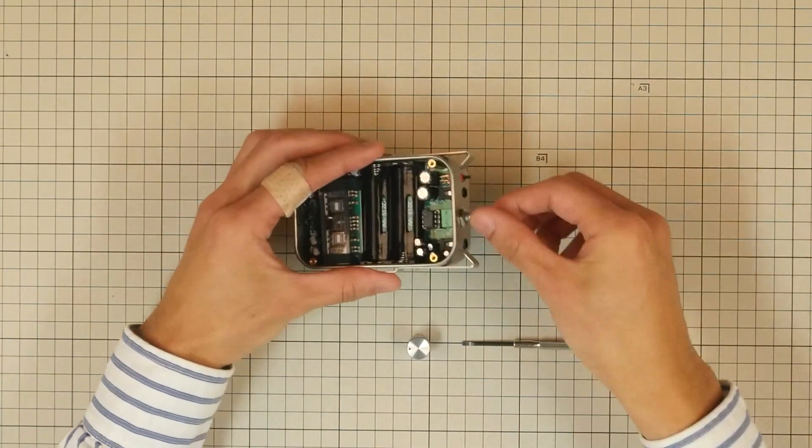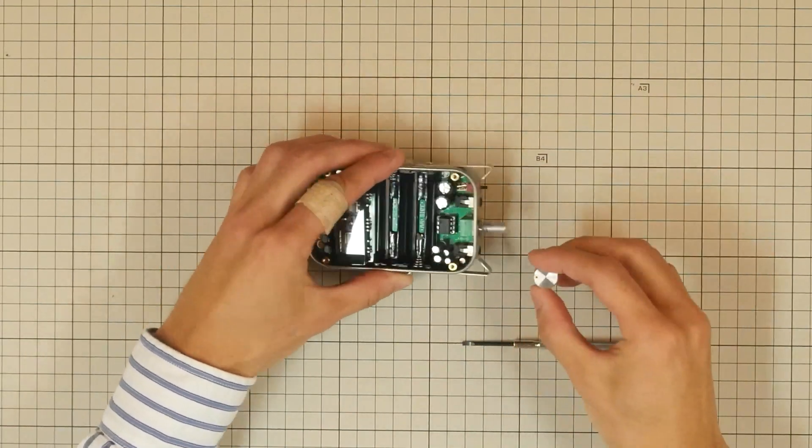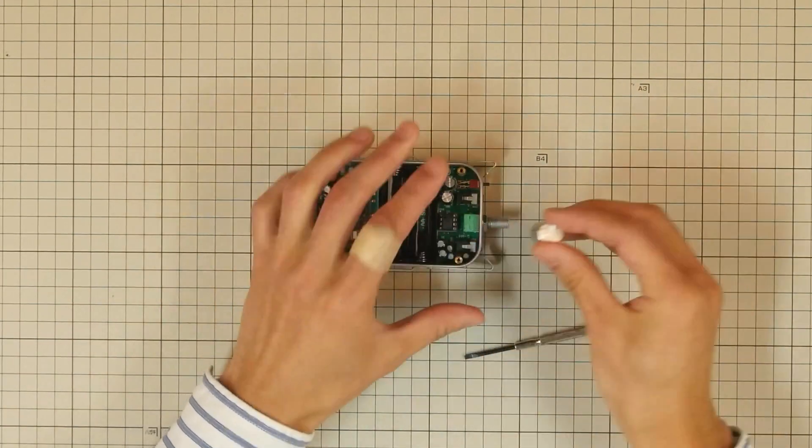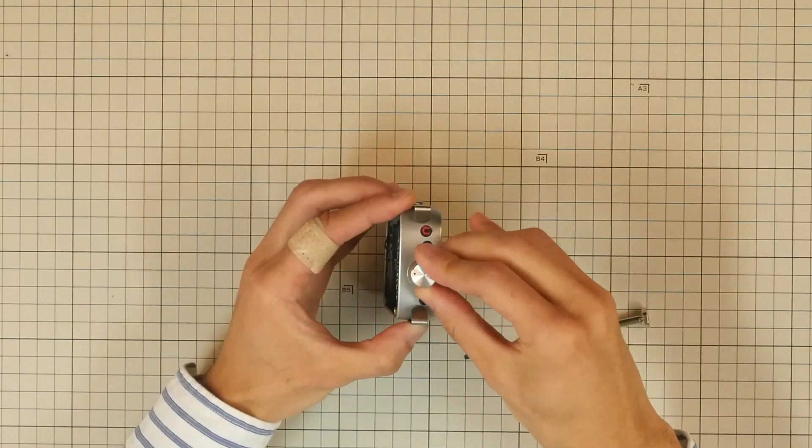Now it's time to add a knob onto the volume control. Attach the knob to the volume and tighten the fastener screw with a hex wrench.